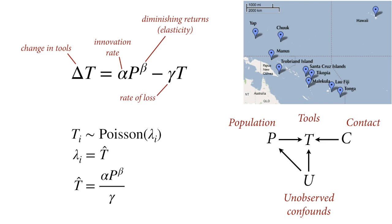In the conceptual causal graph, spatially patterned unobserved confounds are influencing both technology directly and potentially populations as well, through different resource bases and geographical features. If we try to estimate the influence of population size on tools, this is a threat that biases our inference. We had used a model based on a simple innovation and loss model — the governing equation says the change per unit time in the number of tools is a function of the innovation rate (alpha times population P to the power beta with diminishing returns) minus losses proportional to the number of tools.